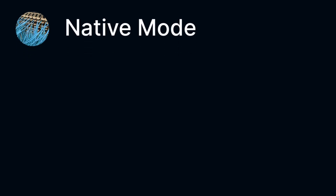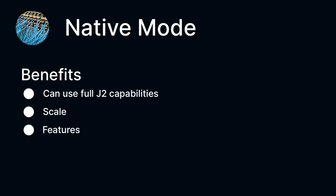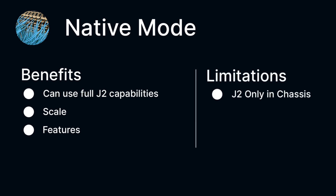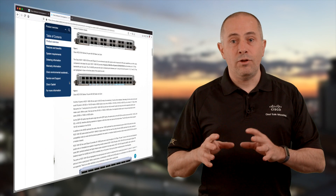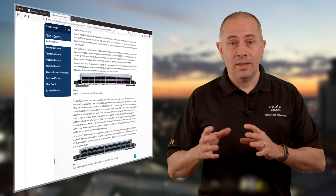The second operation mode is called native. It can be enabled when your router is exclusively populated with Jericho 2 chipsets. With this mode, it's now possible to go beyond what Jericho Plus offered, both in terms of scale and features — I like to say we unleash the NPU capabilities. That's also why we are introducing this month a line card that looks exactly the same as something we already have in the portfolio: the NC5736HSC.